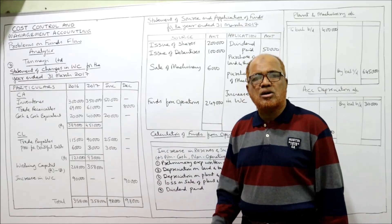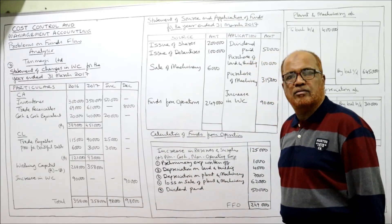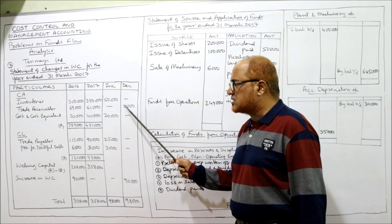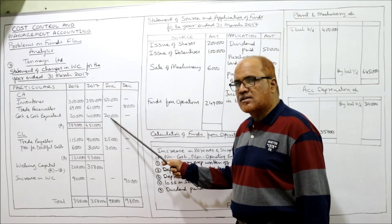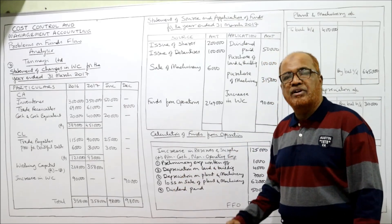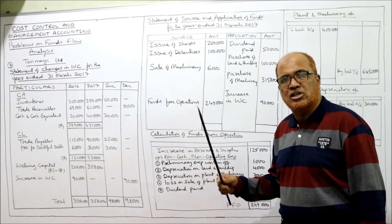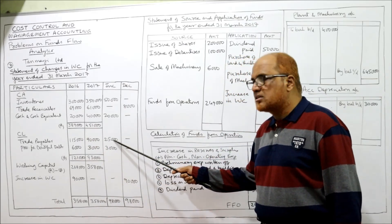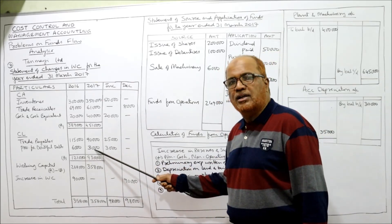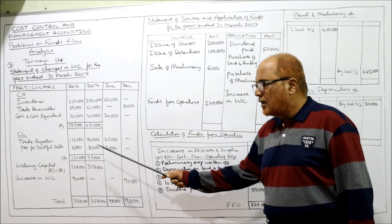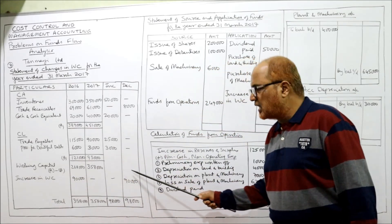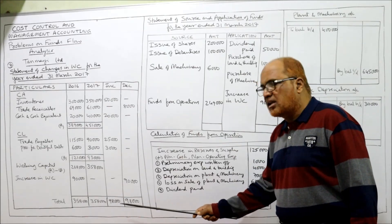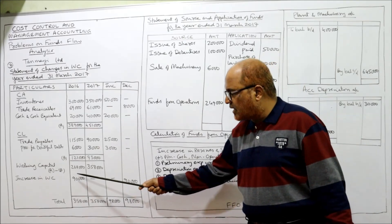To confirm whether the ninety thousand is correct, we make two columns — increase or decrease. Inventories: three lakh to three lakh fifty — fifty thousand increase. Trade receivable: sixty-nine to sixty-one — eight thousand decrease. Cash: twenty to forty — twenty thousand increase. For current liabilities it is opposite: if increased, call it decrease. One fifteen to ninety — decrease, so take in increase column. Six thousand to three thousand decreased, take in increase column. Increase in working capital goes in the decrease column. Total ninety-eight thousand in both columns — answer is correct, ninety thousand.